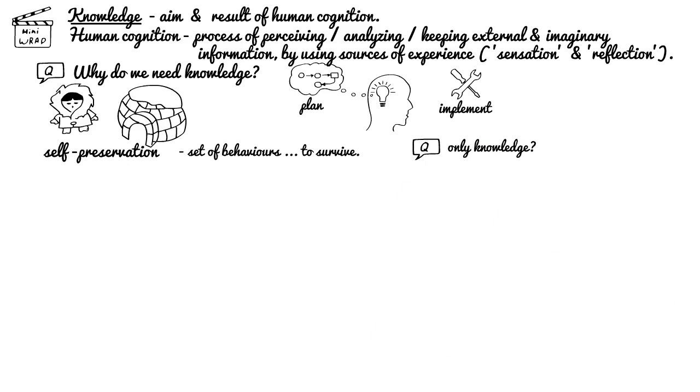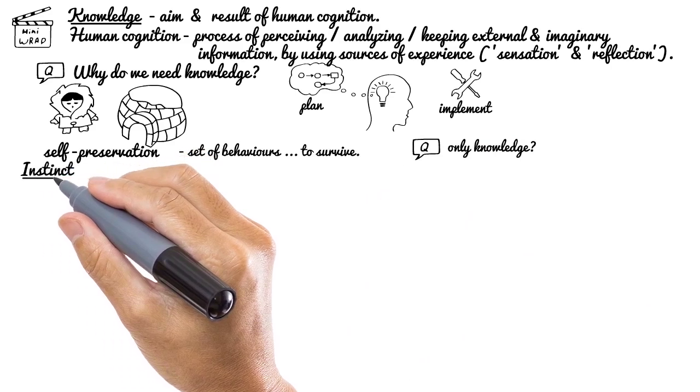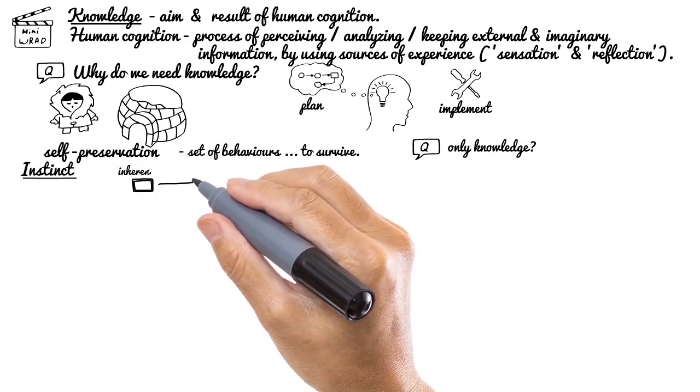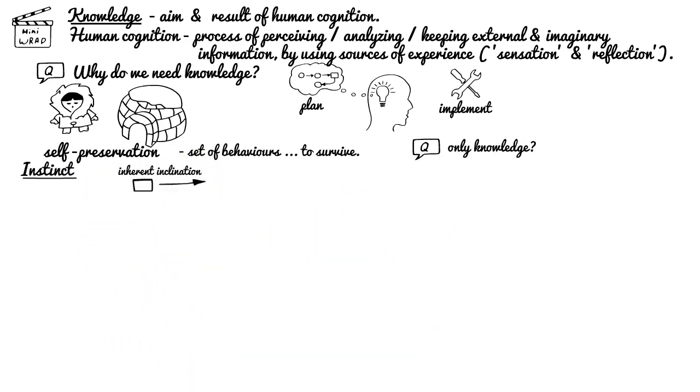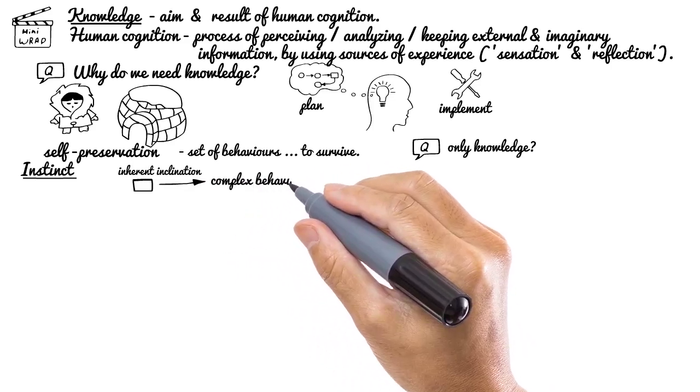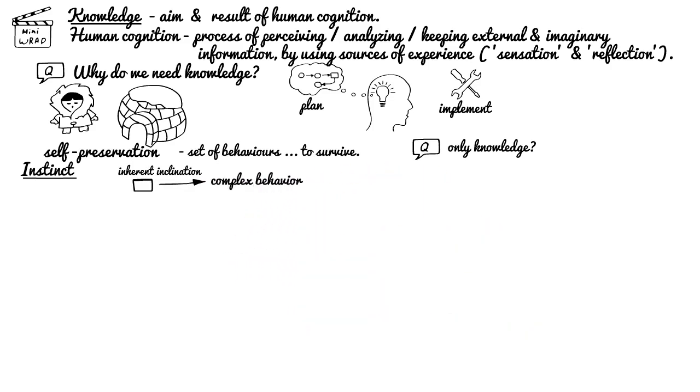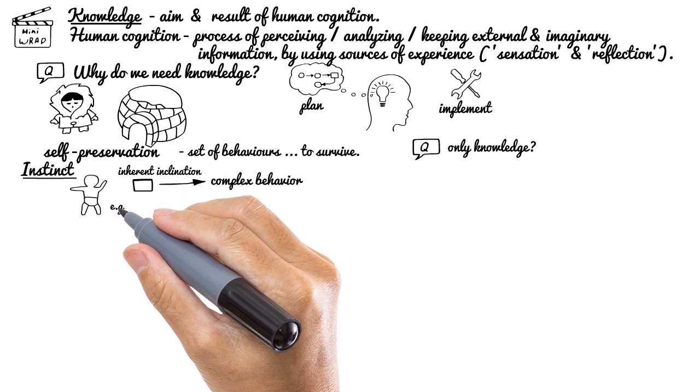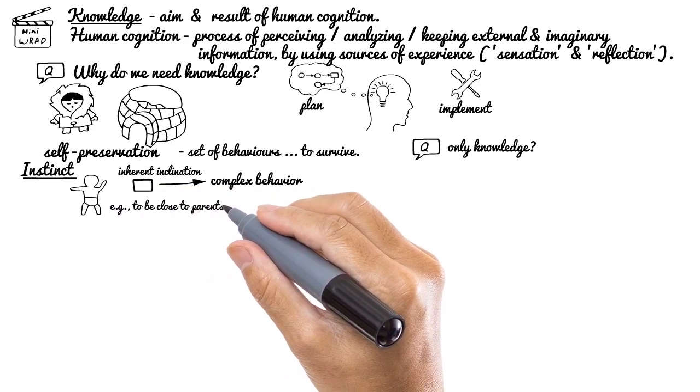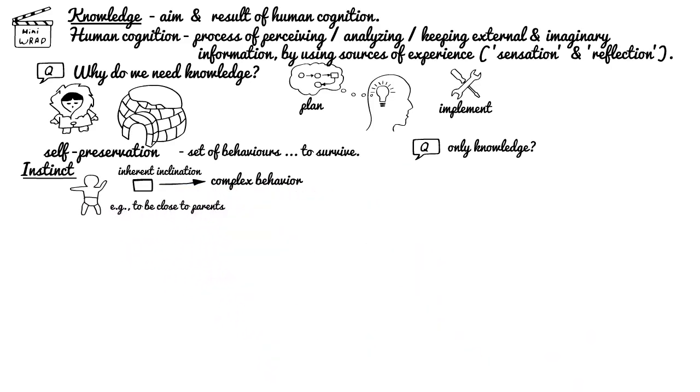Have you heard about reflexes and instincts? Instinct is the inherent inclination towards a particular complex innate stereotype behavior. As an example of instinct, we can show child tendency to be very close to the parents at early childhood, since such instinctive behavior is more safe from survival point of view. After all, parents in general will try to do their best to protect their kids, won't they?